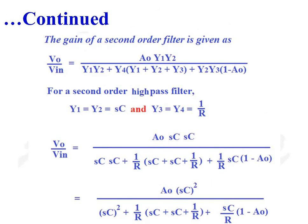We know that the gain of a second-order filter is given as V0/VIN = A0·Y1·Y2 / [Y1·Y2 + Y4·(Y1 + Y2 + Y3) + Y2·Y3·(1 − A0)]. This is for a second-order high-pass filter.